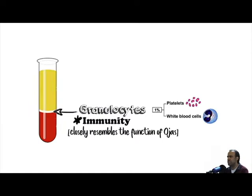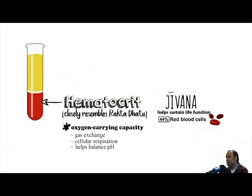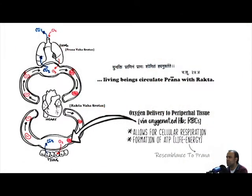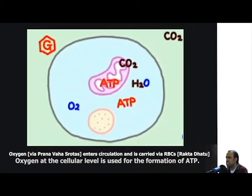The middle separation contains mainly granulocytes such as white blood cells, and this provides the immune function of blood, perhaps best resembling the function of ojas. The bottom portion of fractionated blood is hematocrit, which mostly contains red blood cells, and the hemoglobin within red blood cells allows for the blood's oxygen carrying capacity. This allows for cellular respiration and the formation of ATP, which is the energy currency required for life — hence why Raktadatu is considered Jivanam.